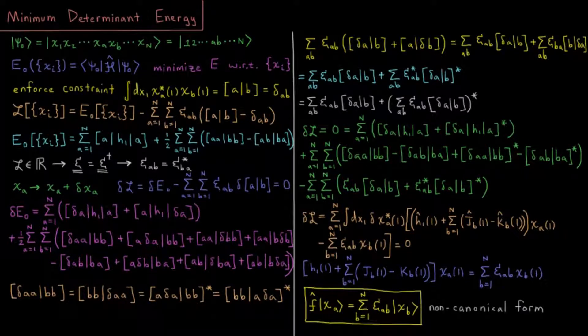This video will use functional variation to determine the minimum energy of a determinant of spin orbitals as needed to compute the energy in Hartree-Fock theory.